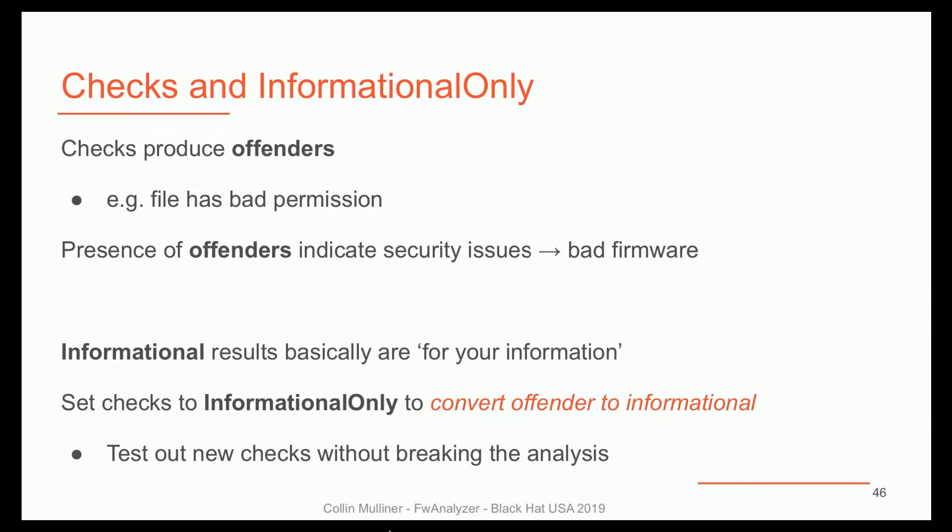Normally when the tool runs and a check fails, it produces what we call an offender — basically: this file should have this permission, it doesn't, that's a bad thing. There's also informational: basically non-failing extracted information, just to see what's there. Sometimes, say you're already in production and you want to add more checks but don't want to immediately make it a failing check — you can set any test to informational only, and instead of failing it will just give you an informational entry. That's really nice for testing out new checks.